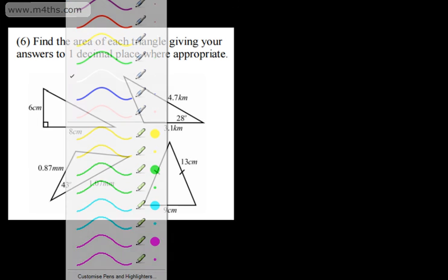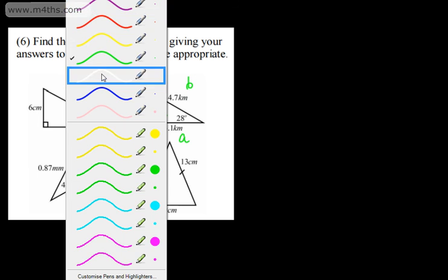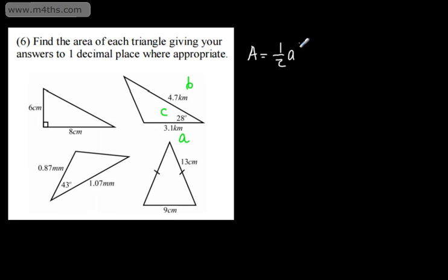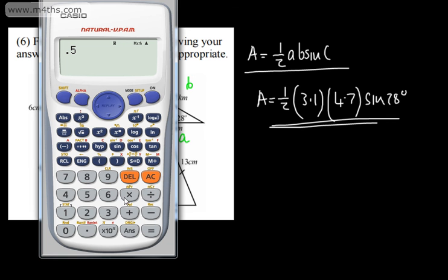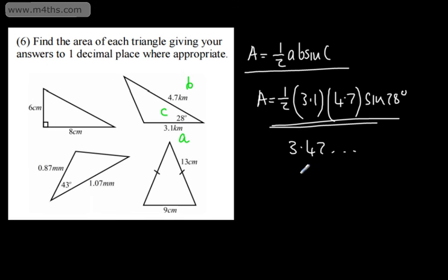Here we have the enclosed angle and two sides. Labeling this as C, A, and B, the area is 1/2 AB sine C. In this case the area is 1/2 × 3.1 × 4.7 × sine 28°. Doing 0.5 × 3.1 × 4.7 × sine 28° gives 3.42..., so to one decimal place the area is 3.4 kilometers squared.